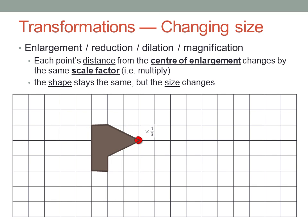Let's try a reduction, where the scale factor is smaller than one. Here, every point's distance from the centre has to be reduced to one-third of what it was. Lightly draw in the lines from the centre to each point, and measure one-third of the distance. Then connect them up. And there's the image. Exactly one-third the size of the original.